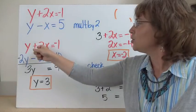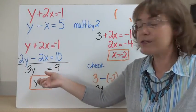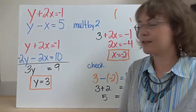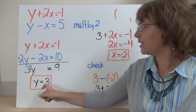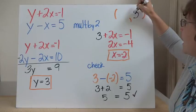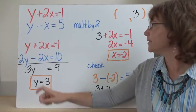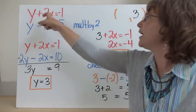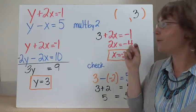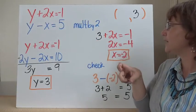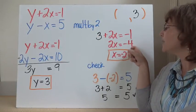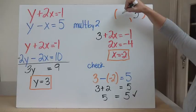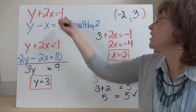Now I can do my addition problem because I'll be able to eliminate my x's. y plus 2y equals 3y. 2x plus negative 2x gives me 0. Negative 1 plus 10 gives me 9. So 3y equals 9. Divide both sides by 3 and y equals 3 — that's my y coordinate. Now I use substitution to find x. Using the first equation: instead of y, I put 3, so 3 plus 2x equals negative 1. Subtract 3 from both sides: 2x equals negative 4. Divide both sides by 2, and x equals negative 2.